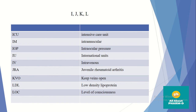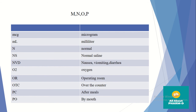MCG means microgram. ML means milliliter. N means normal. NS means Normal Saline — a 0.9% sodium chloride solution. NVD stands for Nausea, Vomiting, and Diarrhea. O2 means oxygen. OR is the Operating Room. OTC means over-the-counter drug — medications you can get without a prescription from a pharmacy. PC means after meals. PO means by mouth, i.e., orally.